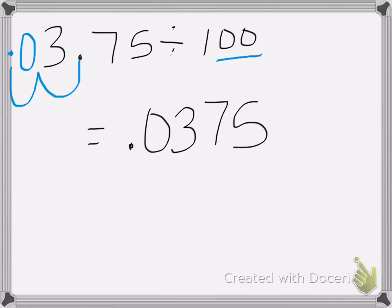So make sure the number of times you move the decimal point matches how many zeros you have. Two zeros, you move it to the left, 1, 2. You just want to make sure that you're moving the decimal point in the correct direction. And that's all. Good luck with your homework.